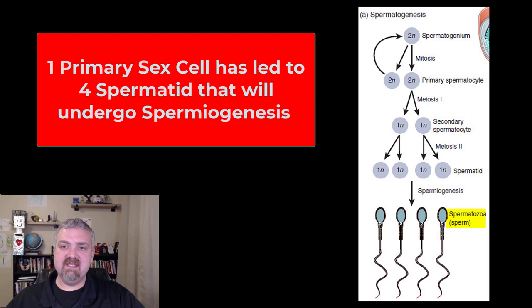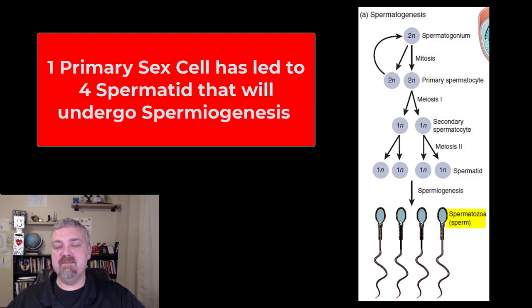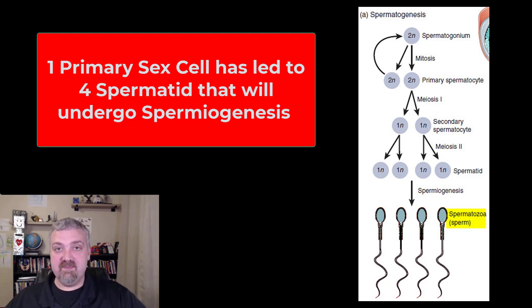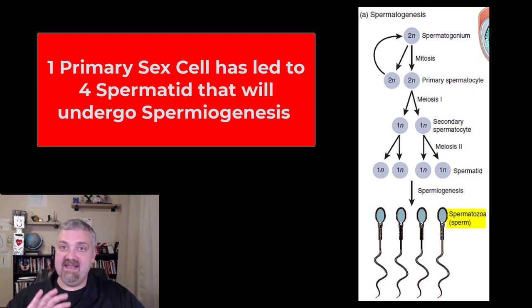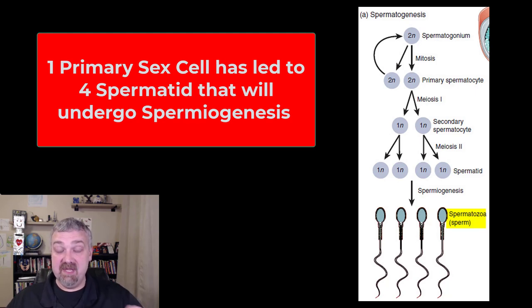This is a continuous process — it's happening every day. The average man is producing 100 to 300 million sperm a day. When we compare this to producing an egg, one primary sex cell only makes one egg. The leftover cells are called polar bodies, because we need millions of sperm but only one oocyte.